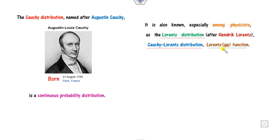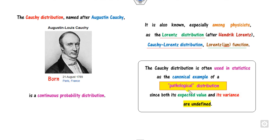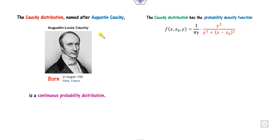This Cauchy distribution is widely popular in physics. It is the canonical example of a pathological distribution. The meaning of a pathological distribution is a function whose mean and variance are undefined. So this Cauchy distribution has no mean and no variance.